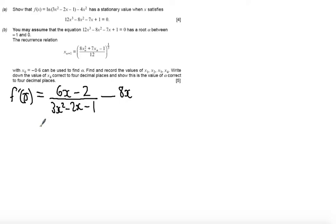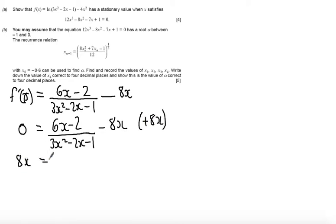So setting this equal to 0 for a stationary value I get 0 equals 6x minus 2 over 3x squared minus 2x minus 1 minus 8x. So I'm going to add 8x to both sides so I get 8x equals 6x minus 2 over 3x squared minus 2x minus 1, and I times both sides by the 3x squared minus 2x minus 1 to get rid of the denominator of that fraction.